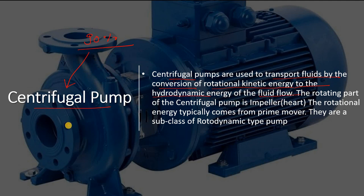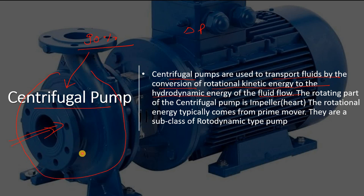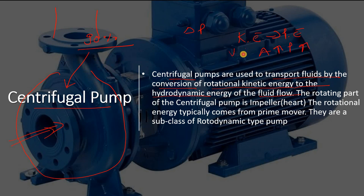In a centrifugal pump, there is an impeller. When fluid goes into the eye of the impeller, a vacuum creates there because pressure is very low. As pressure difference is created, liquid flows from the suction pipe to the eye side. As area increases gradually, kinetic energy converts into pressure energy — pressure increases and velocity decreases.